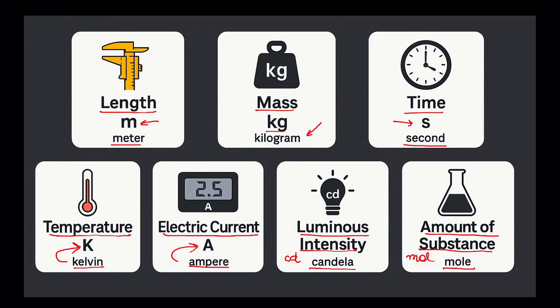What about quantities like speed? Speed is nothing but distance per unit time, so we use length — the first fundamental quantity — and time. Just divide them, so we can say it is a derived unit. The unit of force, acceleration, density — all of these can be derived from these seven fundamental units. And that's why the name fundamental.